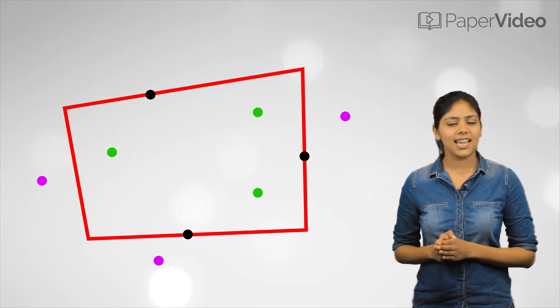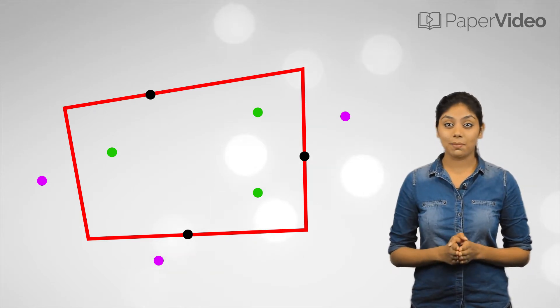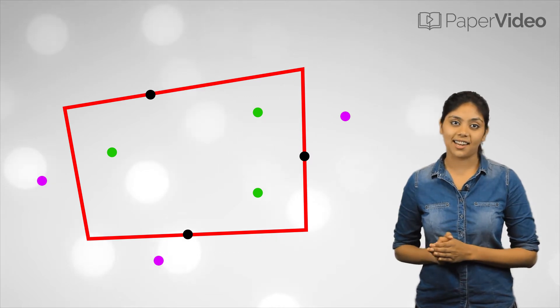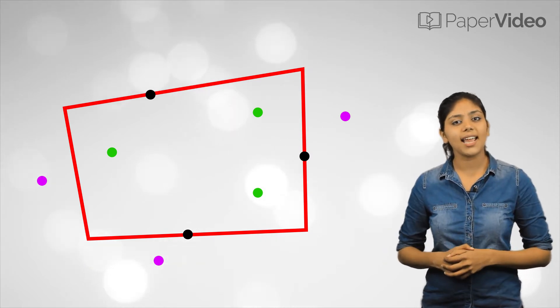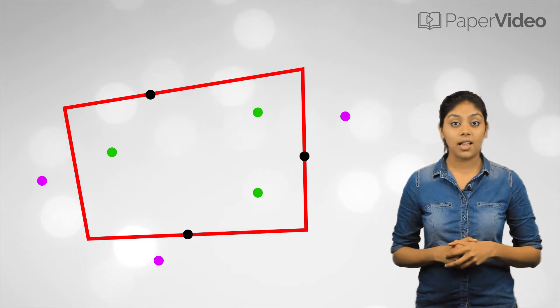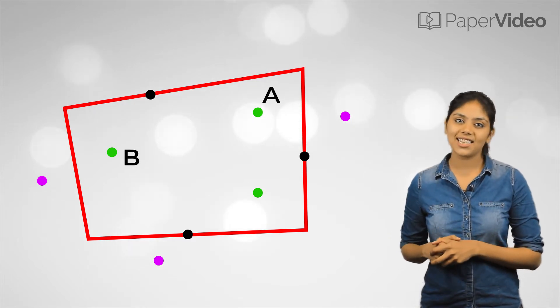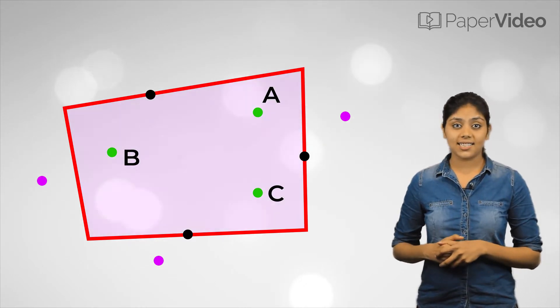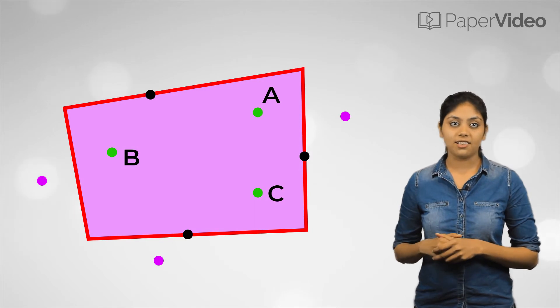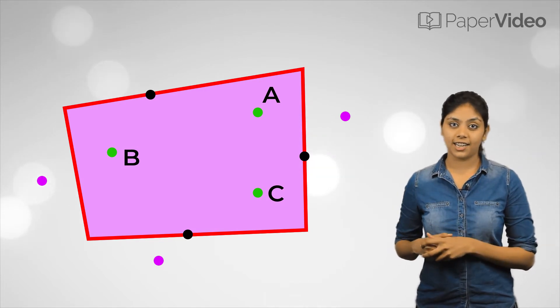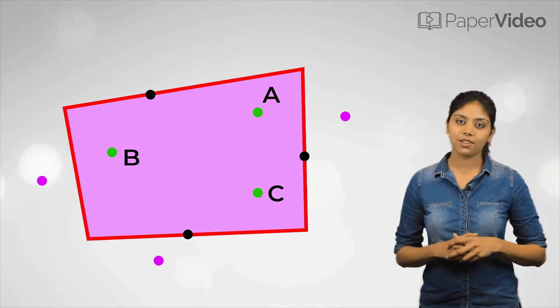What does it mean when I say interior? It means something which is inside. Can you name the points that lie inside the quadrilateral? Points A, B and C. If we shade the inside of the quadrilateral in pink color, then this pink shaded region is known as the interior of the quadrilateral.